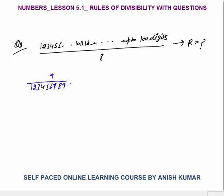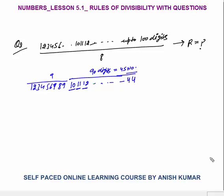Digits 1 through 9 account for 9 digits. Then from 10 onwards each number has 2 digits. 90 more digits makes 45 numbers, taking us from 10 to 54. But 10 to 44 gives 45 numbers and 90 digits. That's 9+90 = 99 digits total. The 100th digit is the first digit of 45, which is 4. So the last three digits of the number are 4, 4, 4 (from ...43, 44, 4).